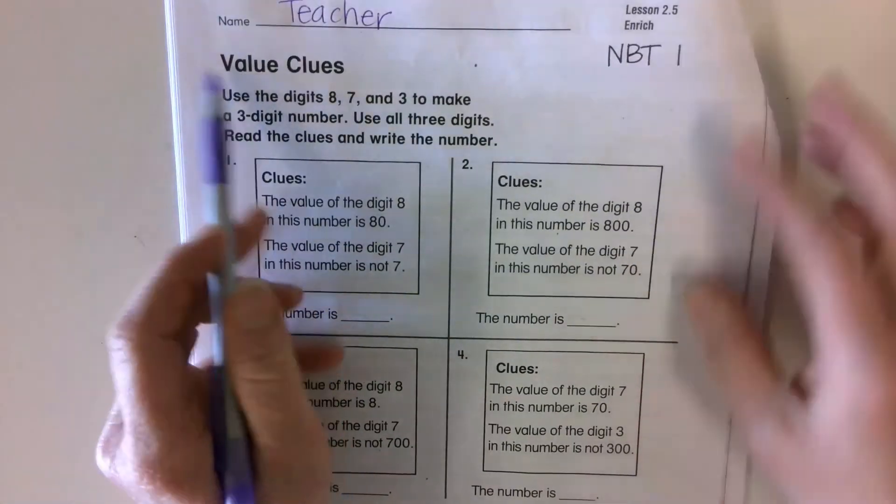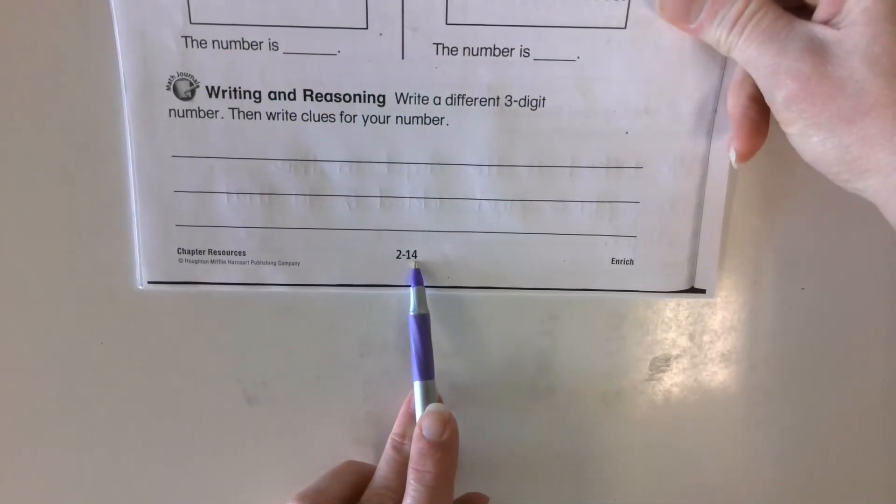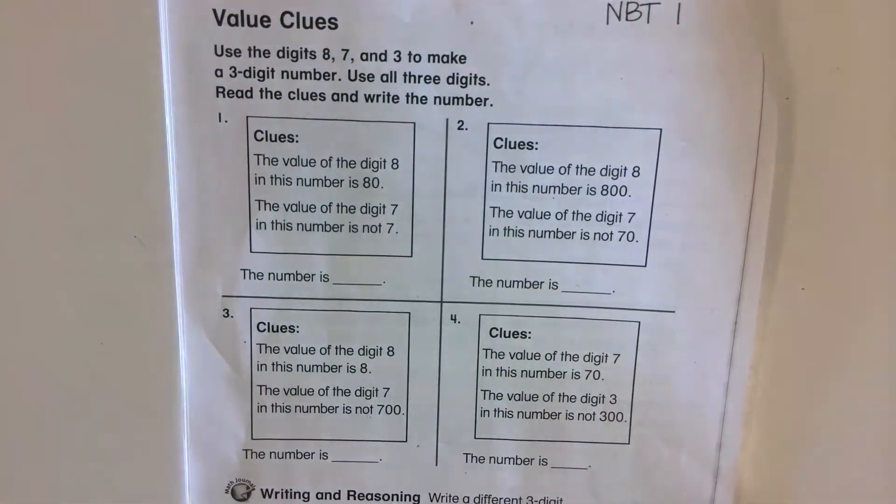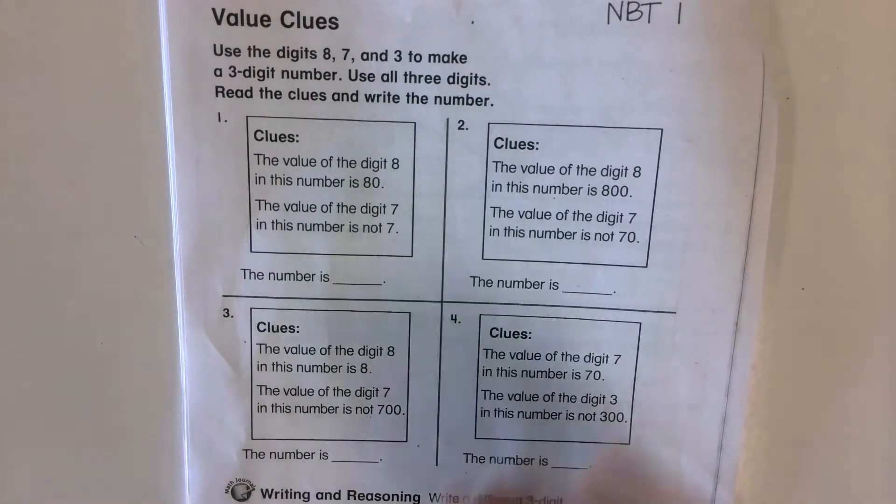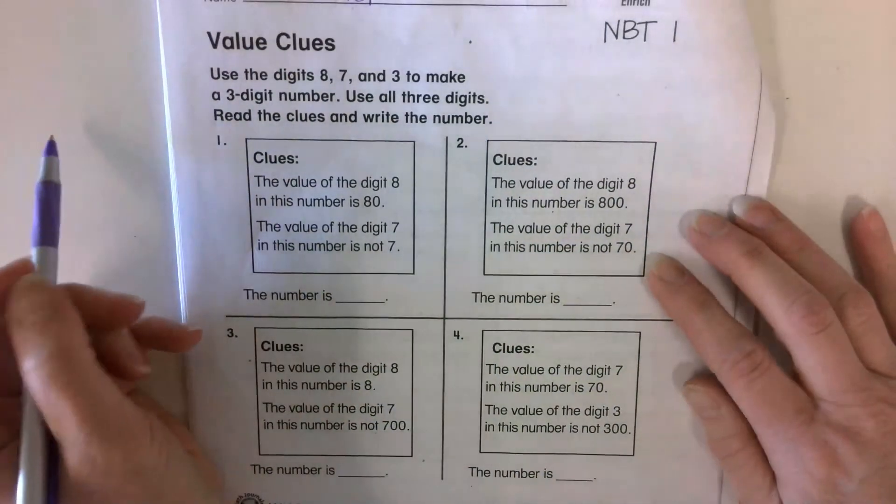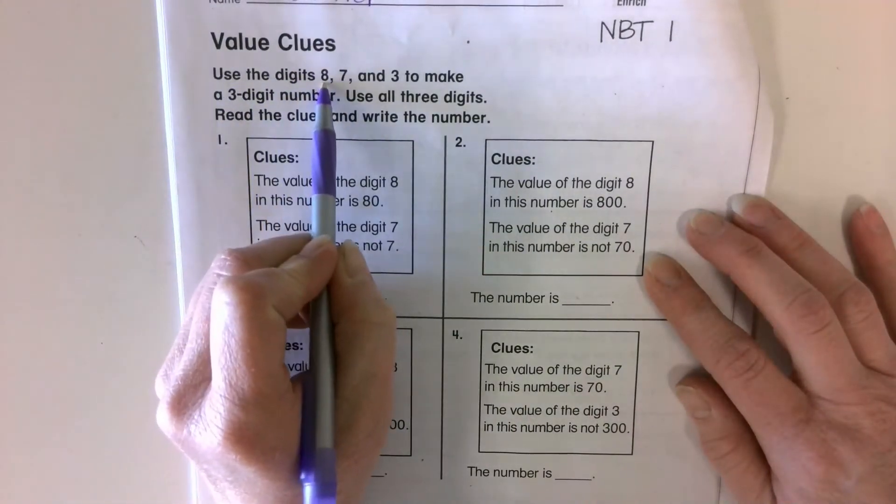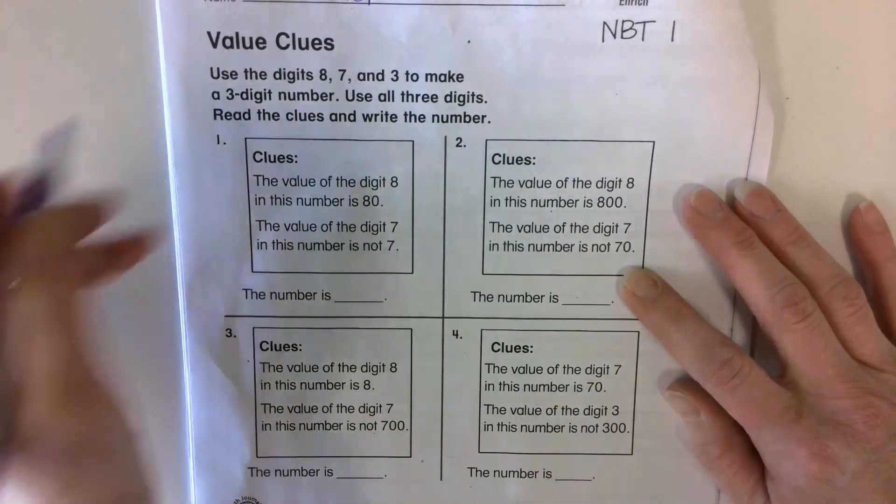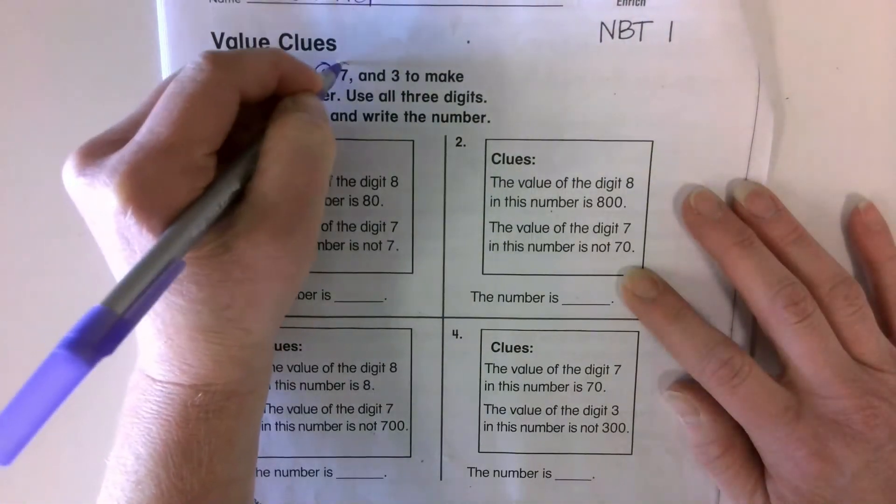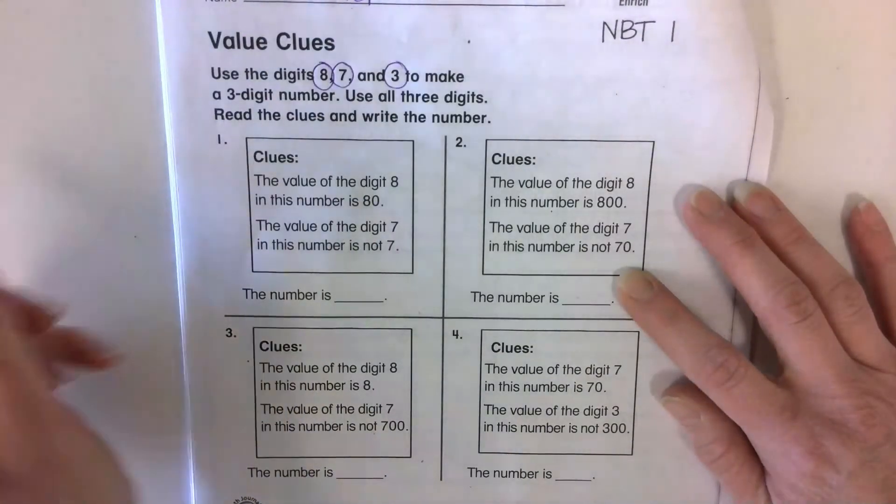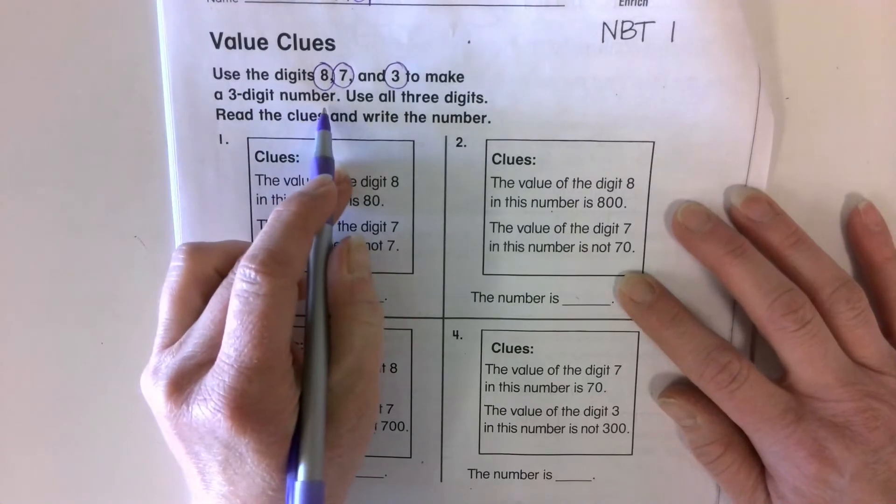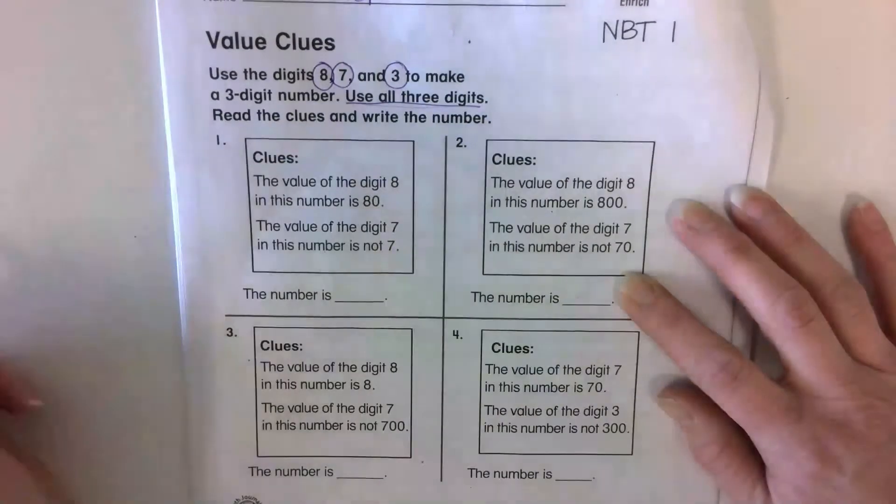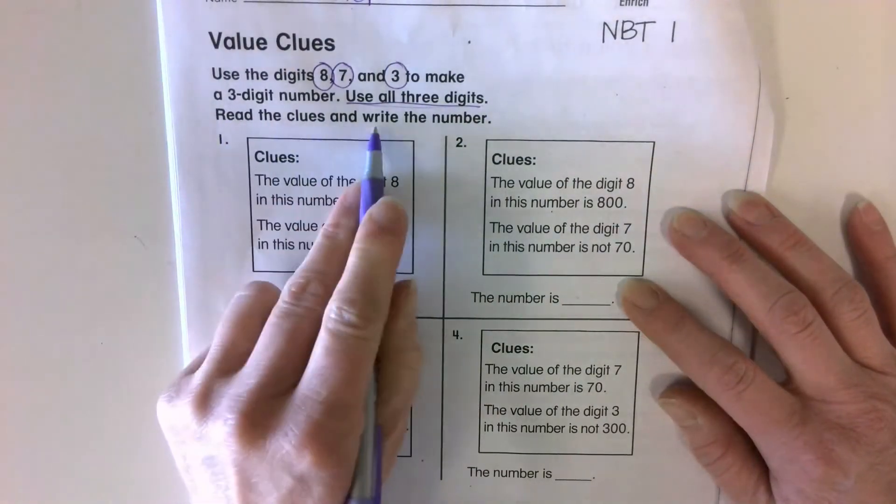This is 2-14. And it says Value Clues. Now really listen. The instructions are very important on this. We're going to read them together. Use the digits eight, seven, and three to make a three digit number. Circle those. We're using the digits eight, seven, and three to make a three digit number. Use all three digits. Read the clues and write the number.